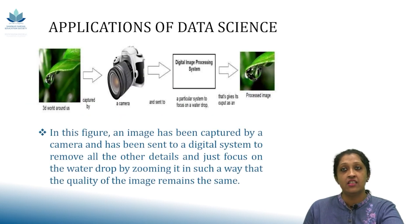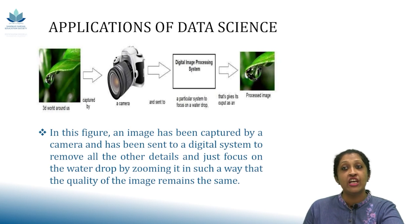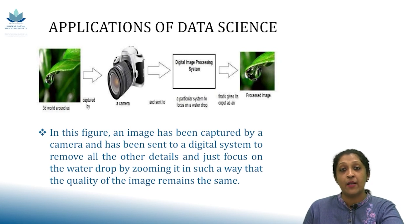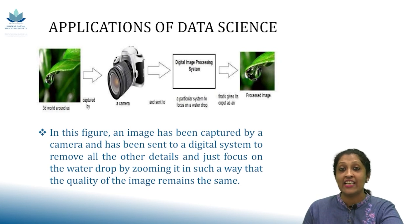In this figure, the image has been captured by a camera and sent to a digital system to remove all other details and just focus on the water drop by zooming in, in such a way that the quality of the image remains the same. That is, by using image processing, we can process an image so that it looks like a real image, while maintaining the quality of the image.